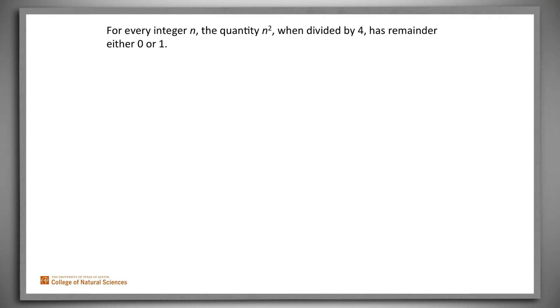Now let's do a more numerical proof example. We want to prove for every integer n, the quantity n squared, when divided by 4, has remainder 0 or 1.